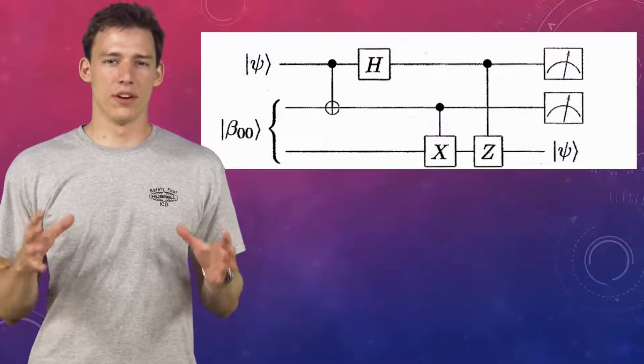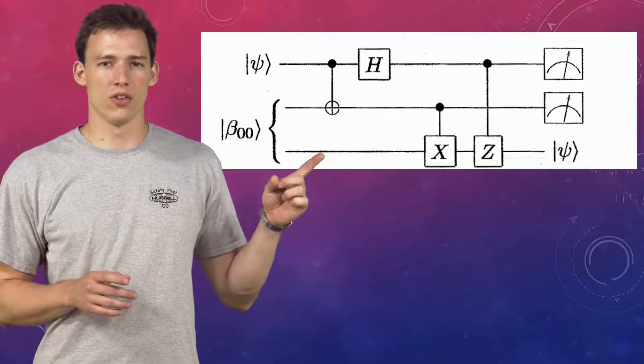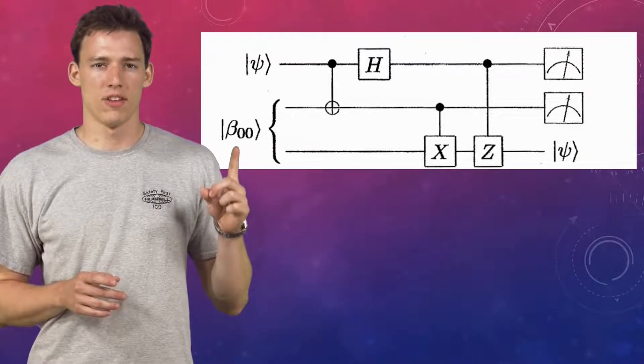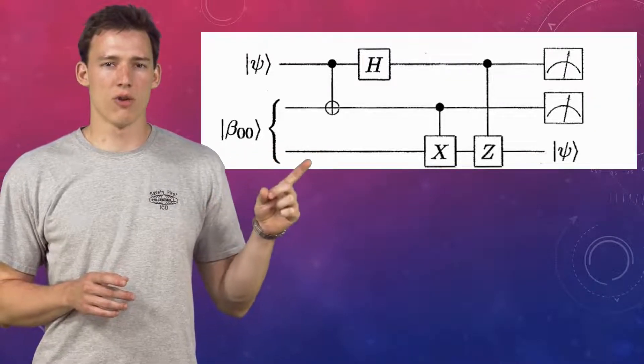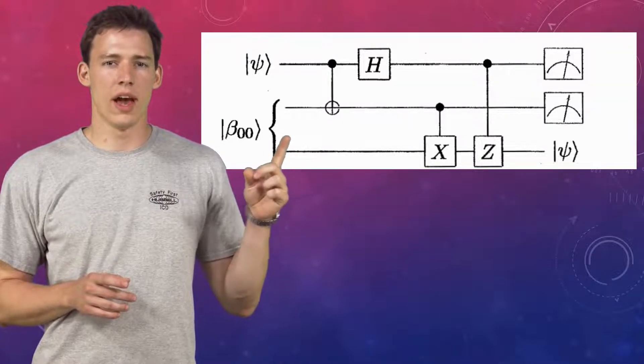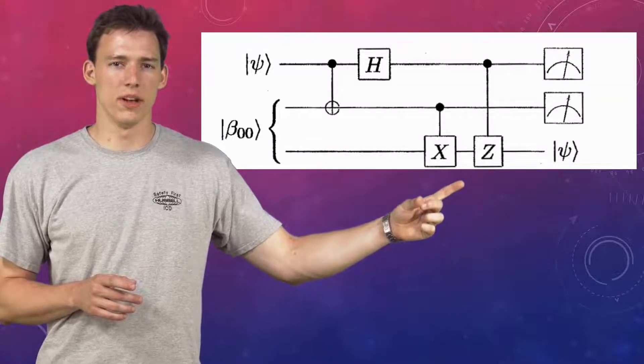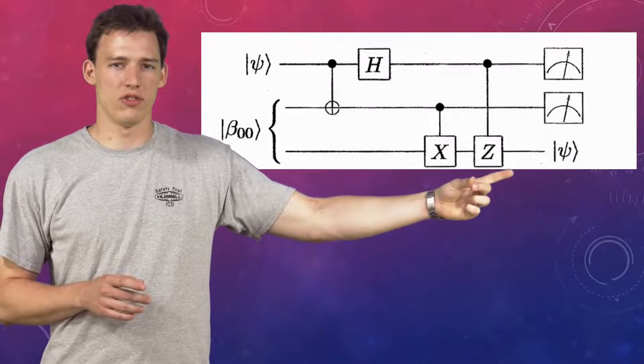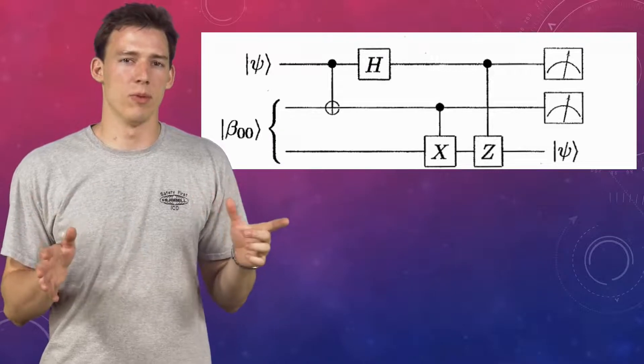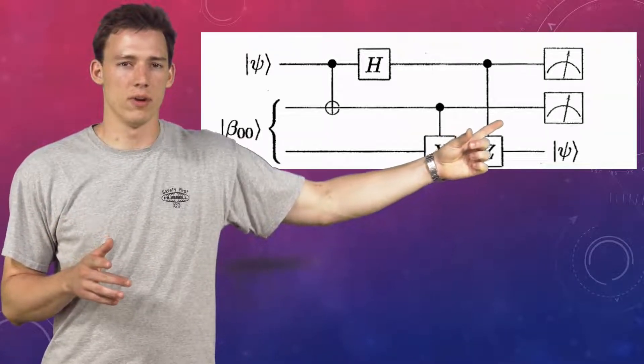Before we go any further with gates, I want to briefly introduce the circuit model notation. What you are looking at right here is a quantum circuit. The left represents the beginning of the circuit, and each line corresponds to a single qubit, who are all initialized to the zero state. As you travel down the wires to the right, each gate that you encounter is applied to each qubit. At the end of the circuit, it is generally implied that some measurement will be performed on some or all of the qubits. This symbol right here indicates measurement.